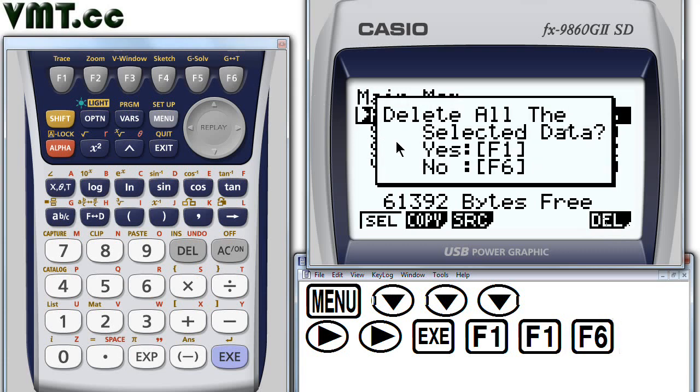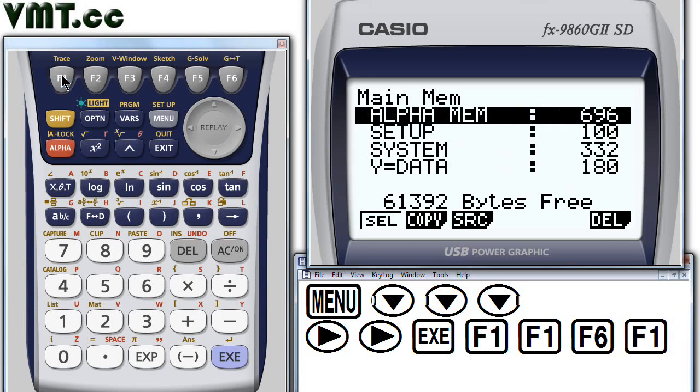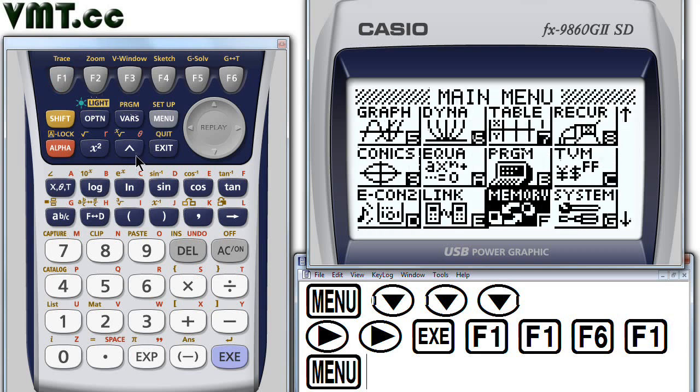To confirm we want to delete all the selected data, select F1 again. Finally, let's return to the run matrix area by typing menu 1.